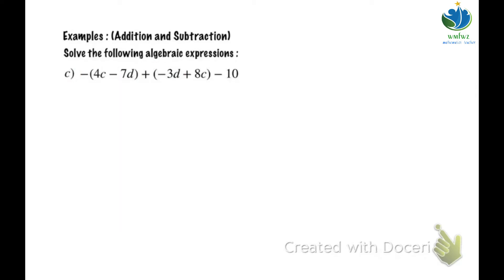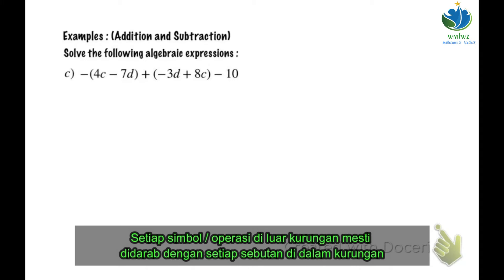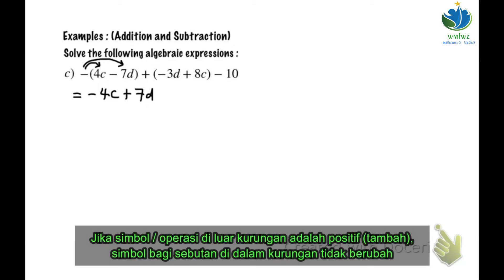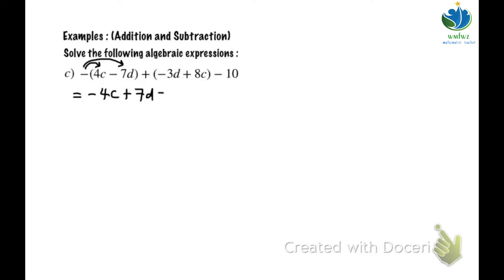Example C. For this question there are brackets. The first step is to open the bracket. When we open the bracket, every symbol outside of the bracket needs to multiply with every term in the bracket: negative multiplied by 4c gives negative 4c, negative multiplied by negative 7d gives positive 7d. If the operation before the bracket is positive, the terms in the bracket don't change, so just open the bracket: negative 3d plus 8c minus 10.